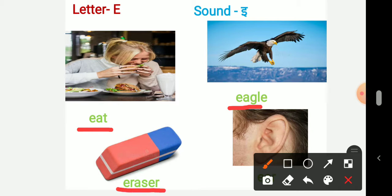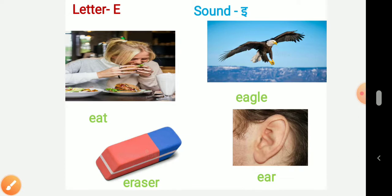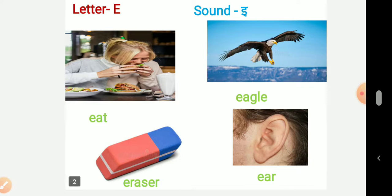Next picture is about eraser. E-R-A-S-E-R, eraser. So the starting sound is E. Word eraser. And the last picture here it is ear. E-A-R, ear. So all these four words are starting with the sound E.